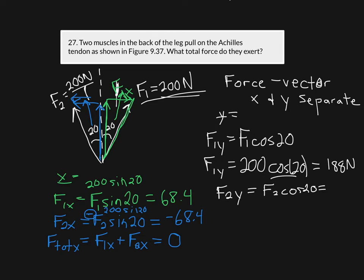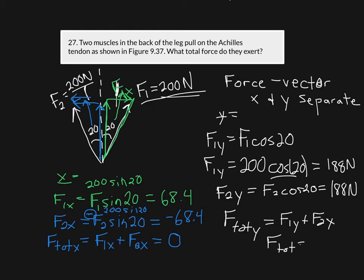Physics really builds on itself, so everything from previous chapters comes back here. For F2, making a triangle and going up and to the left, F2y is also going upward — adjacent to the 20-degree angle — so F2y equals F2 times cosine of 20, giving 188 Newtons as well. The total force in the y direction is F1y plus F2y, and F_total_y equals 376 Newtons.